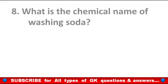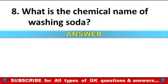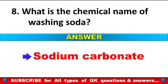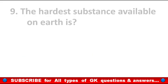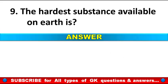What is the chemical name of washing soda? Answer: Sodium carbonate. The hardest substance available on earth is? Answer: Diamond.